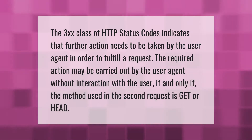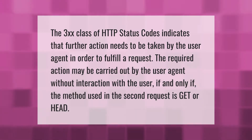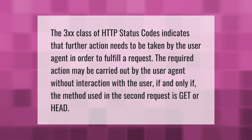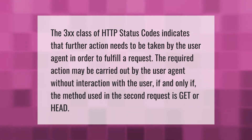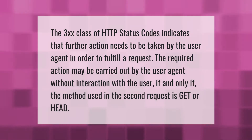The 3xx class of HTTP status codes indicates that further action needs to be taken by the user agent in order to fulfill a request. The required action may be carried out by the user agent without interaction with the user, if and only if the method used in the second request is GET or HEAD.